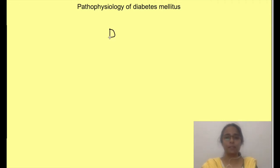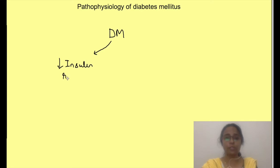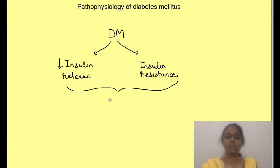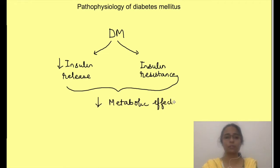Diabetes mellitus occurs due to deficiency of insulin function, which may occur either due to decreased insulin release or due to decrease in its actions on its receptors, which we call as insulin resistance. Both decreased insulin release and insulin resistance obviously decrease the effect of insulin on various limbs of metabolism.